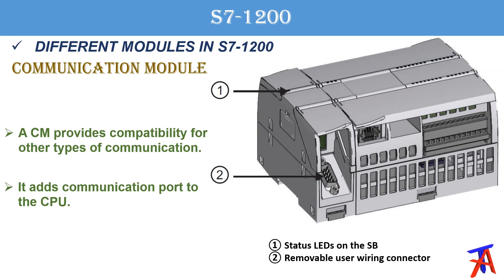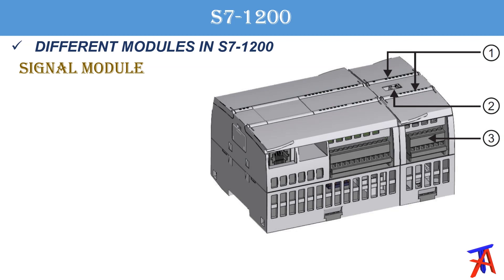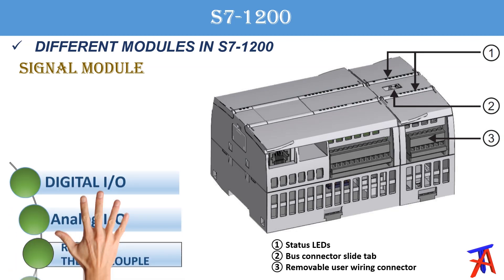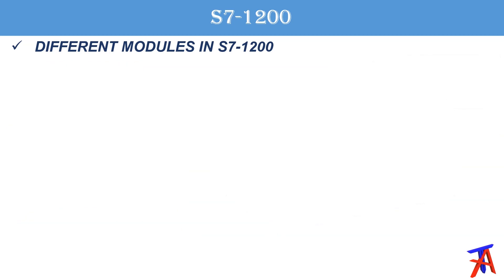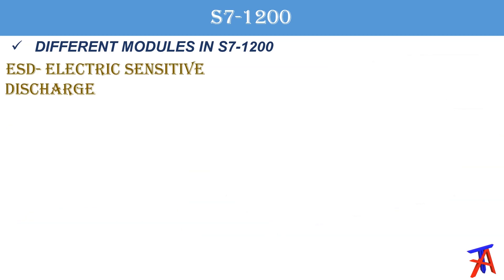The communication module provides an additional communication port not available on the PLC by default. Next are signal modules, which can be added to the right side of the PLC. Signal modules can be of various types: digital inputs or outputs, analog inputs or outputs, RTD and thermocouple temperature sensors, and SM1278 IO-Link master.